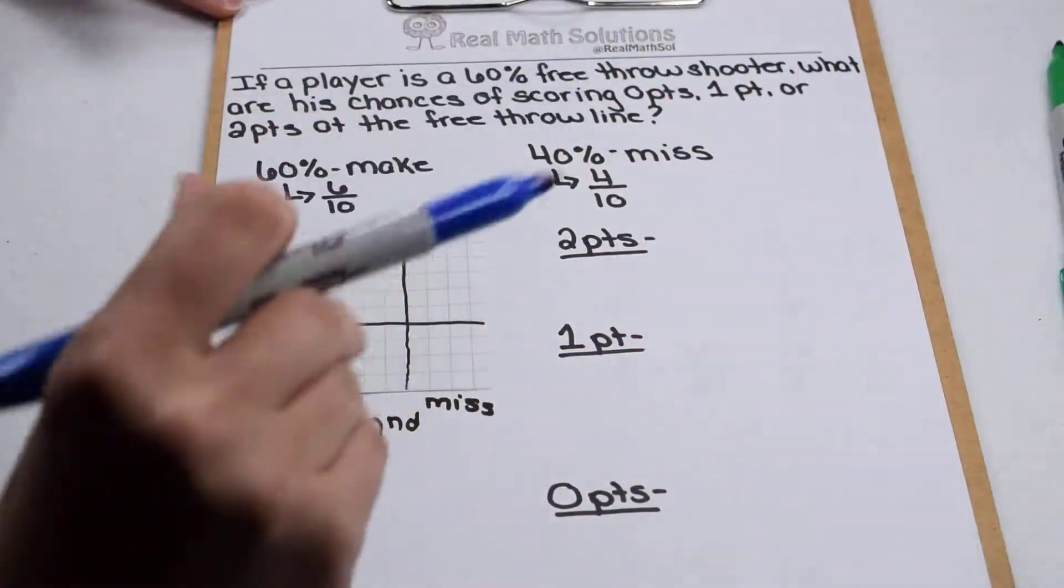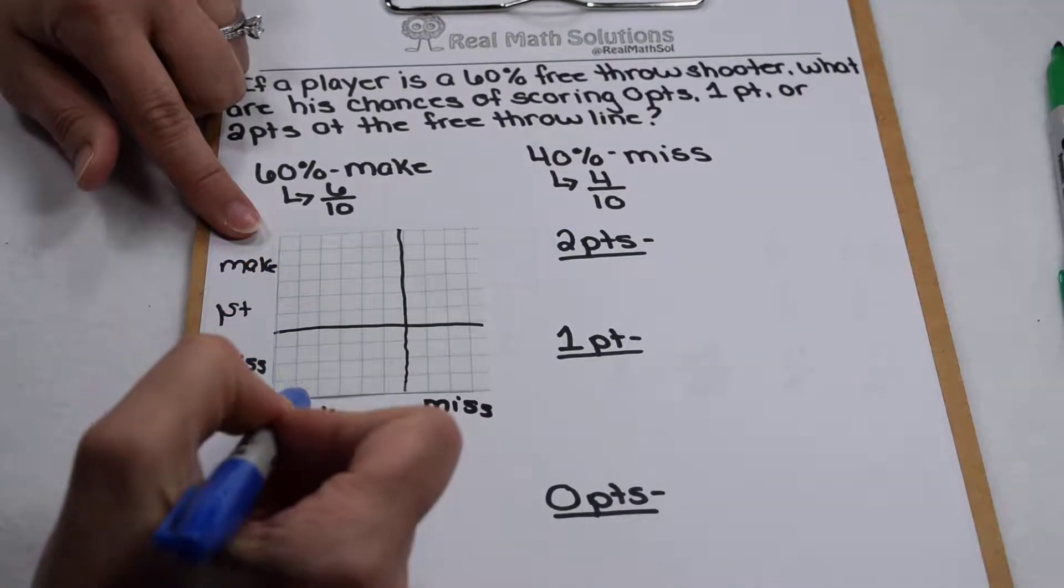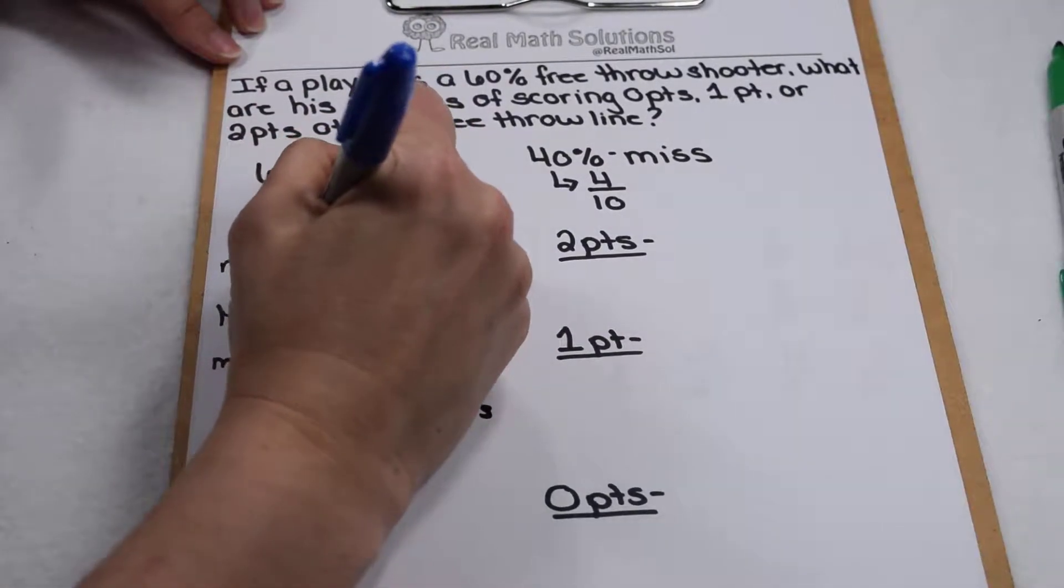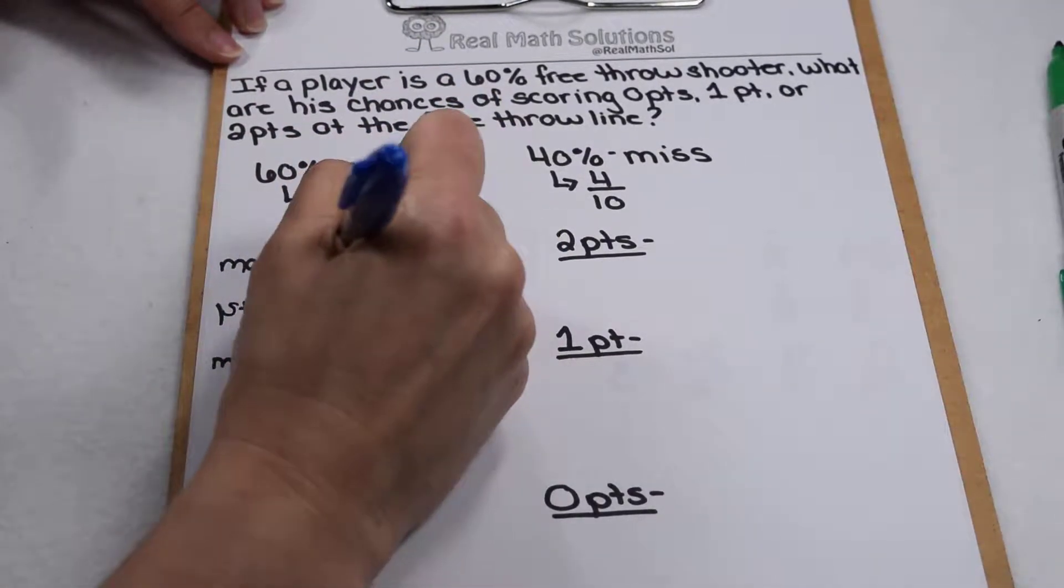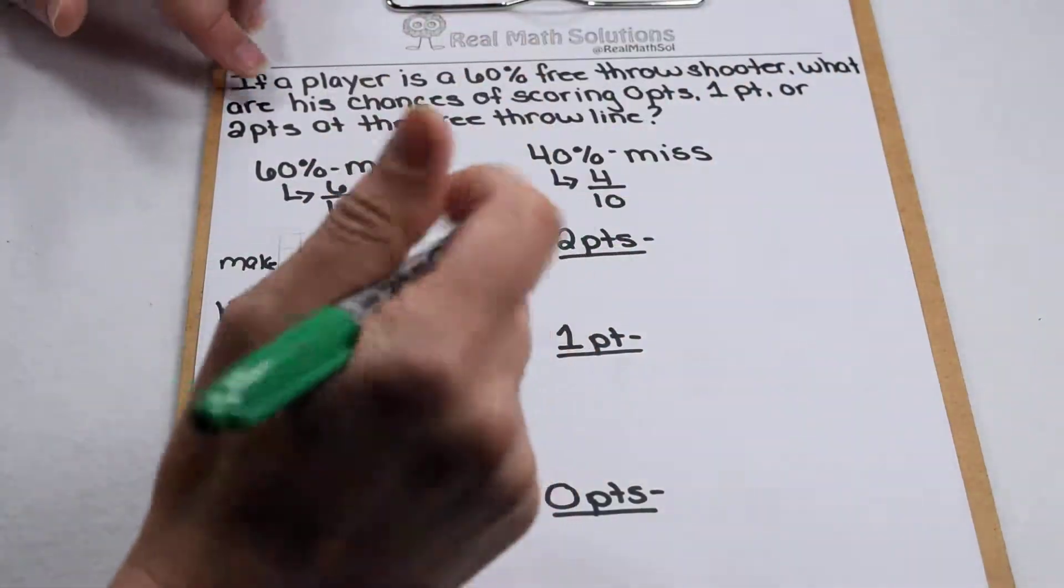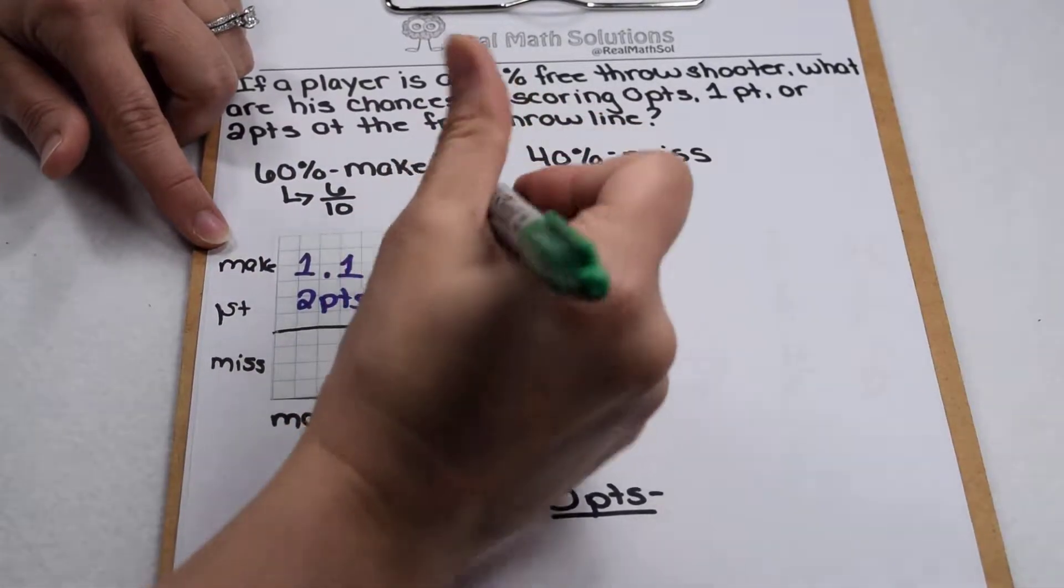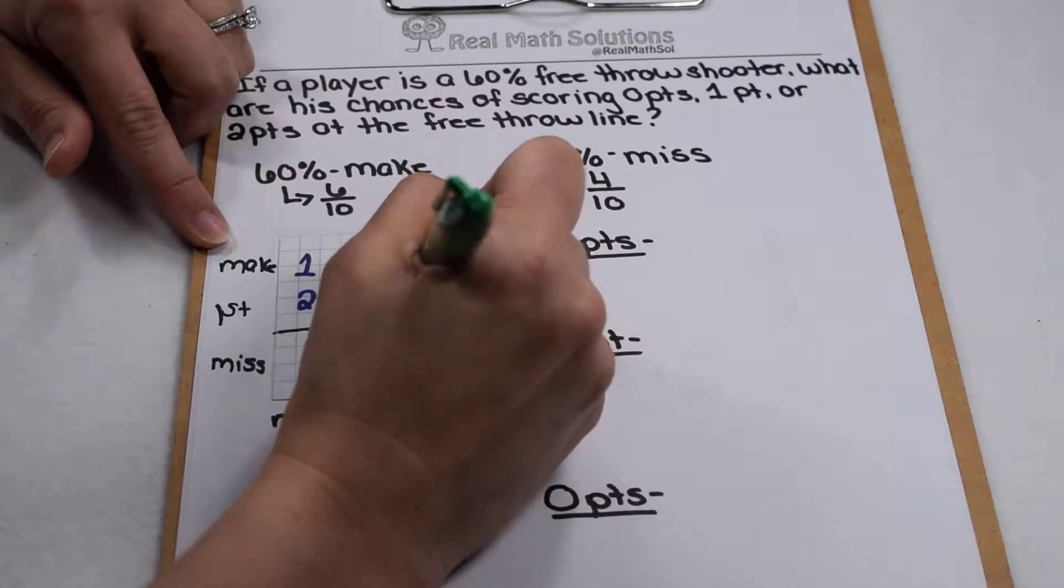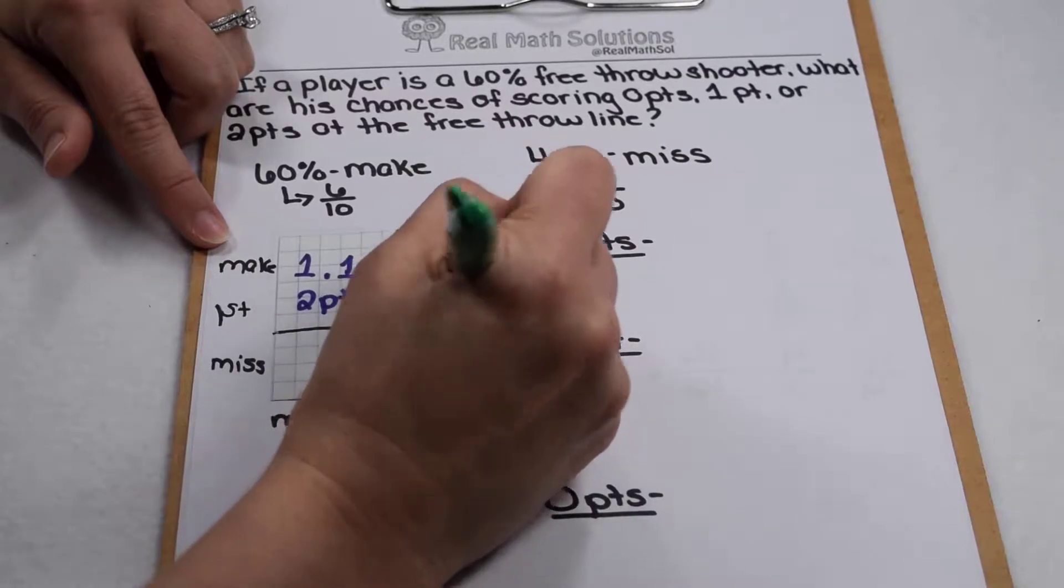Now we can look at each shot. This box, we would make it and make it. So we would score 1 point on the first shot, 1 point on the second shot. So all together, we would have 2 points. In this box, we would make the first shot, but we would miss the second shot. So this box would represent 1 point.